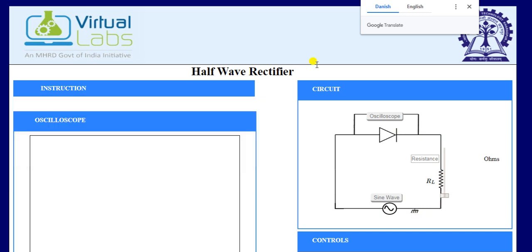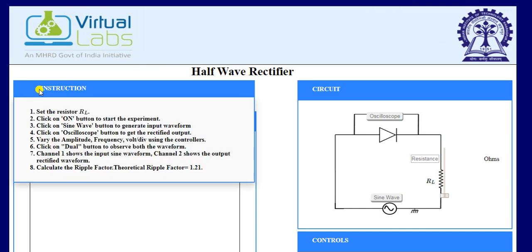On the left hand side, there is a list of instructions which we have to follow for the simulation of the circuit. So set the value of load resistance, click on button, then click on sine wave, then oscilloscope.